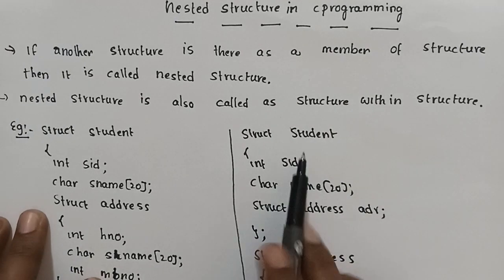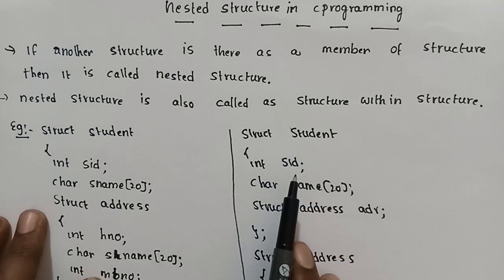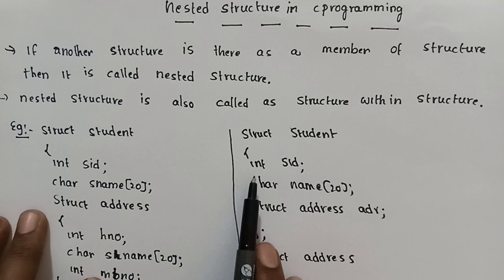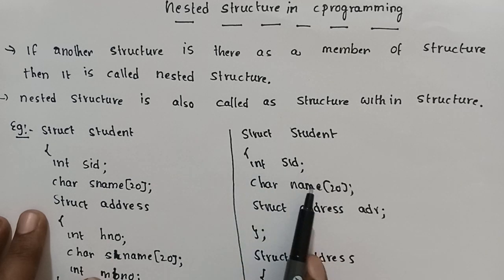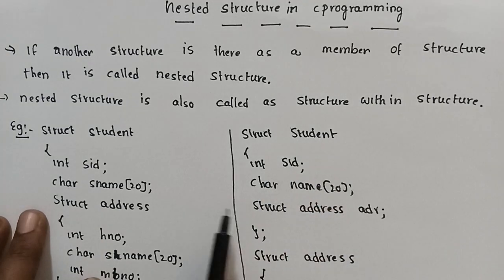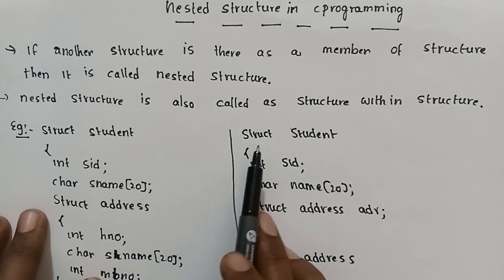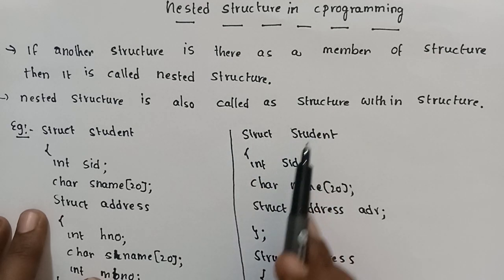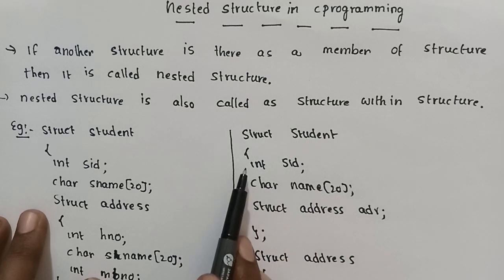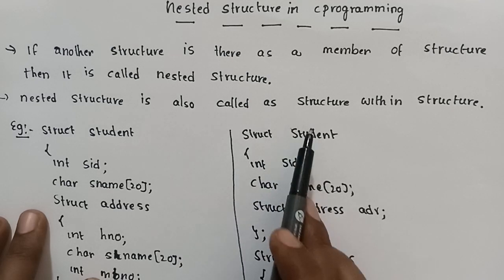Suppose, here is a student structure. The student structure has an integer data type and the student name is a char data type. The structure is a user-defined data type used to store elements of different data types under a single name.